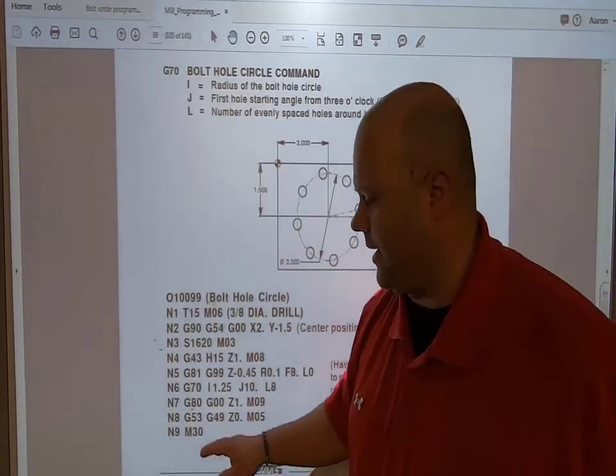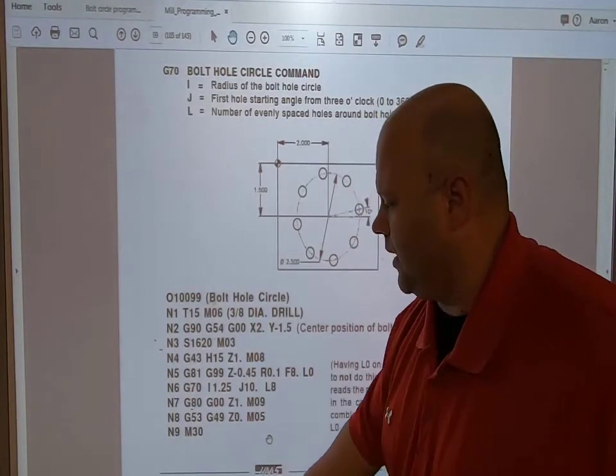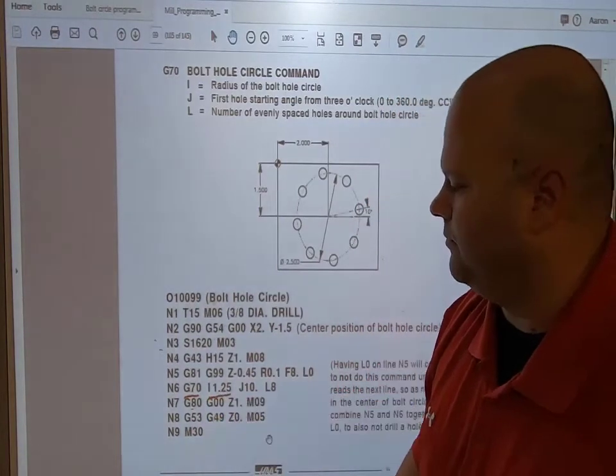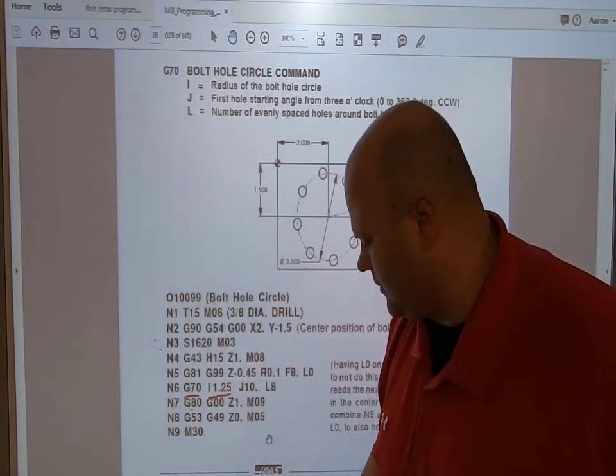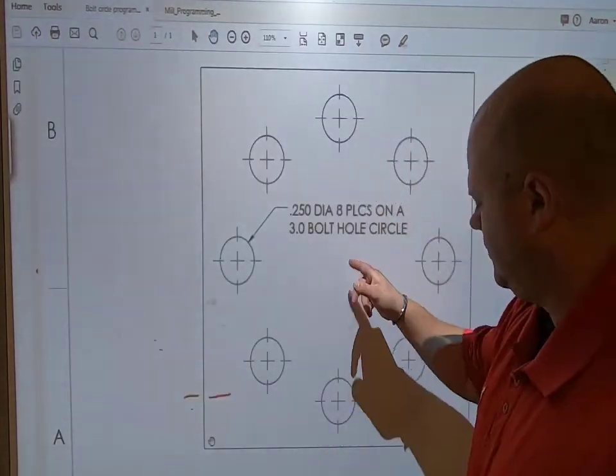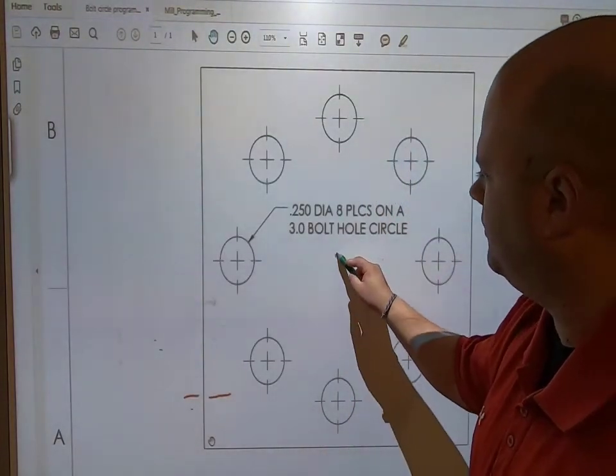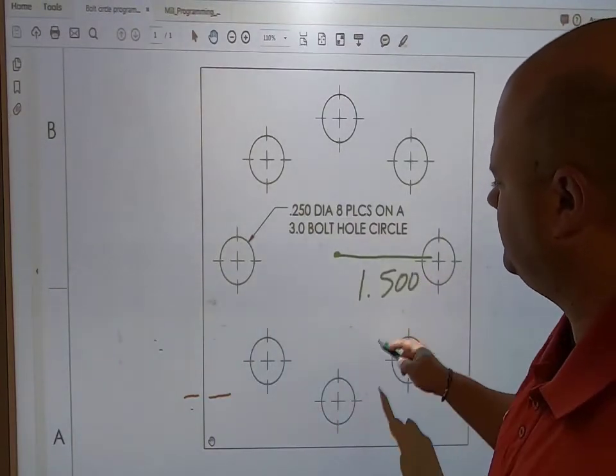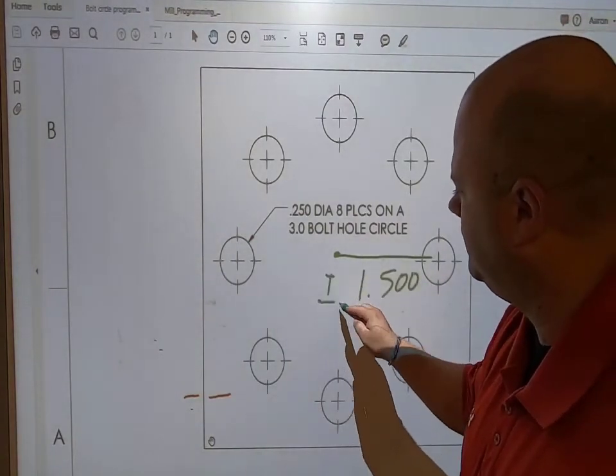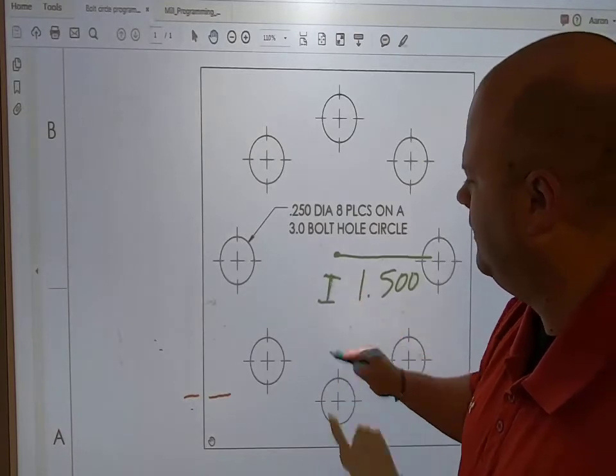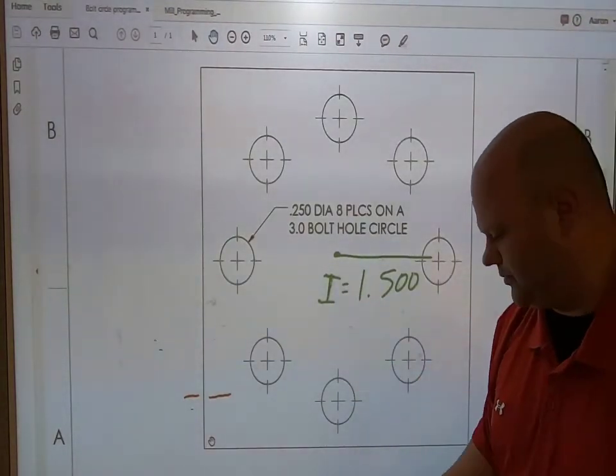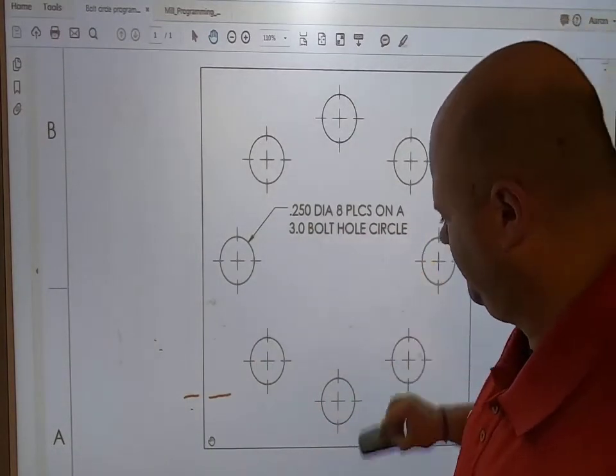Now we get into the actual G70. I've got my G70, I've got my I - that's one inch, two hundred fifty thousandths. But if we look at our part, that I from here over is one inch, five hundred thousandths. So our I will equal one inch, five hundred thousandths.